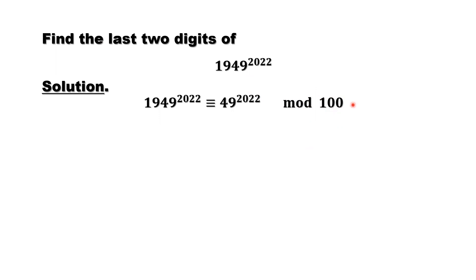What are those possible remainders for 100? Zero means the last two digits are 00. If it is 1, it means the last two digits are 01.